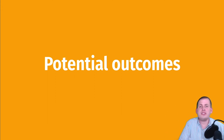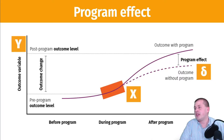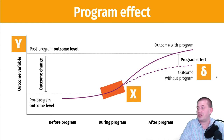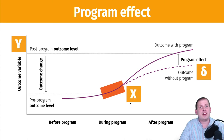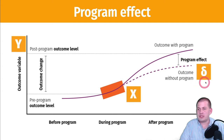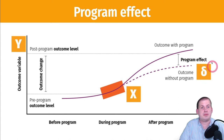Before we talk about potential outcomes, I want to quickly review the idea of program effect, which we talked about in the last session. What we're most interested in — in any causal inference situation — is finding this number here: delta (δ), the lowercase letter d in Greek. This is what we care about: the program effect.